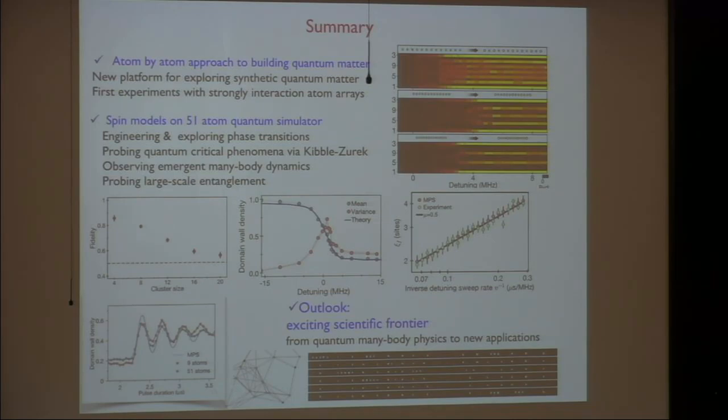Questions. So, how extensible do you think this mechanism is for multiple controlled-NOT gates? And do you think there's some fundamental limit in terms of how many control qubits you could have with a single target?